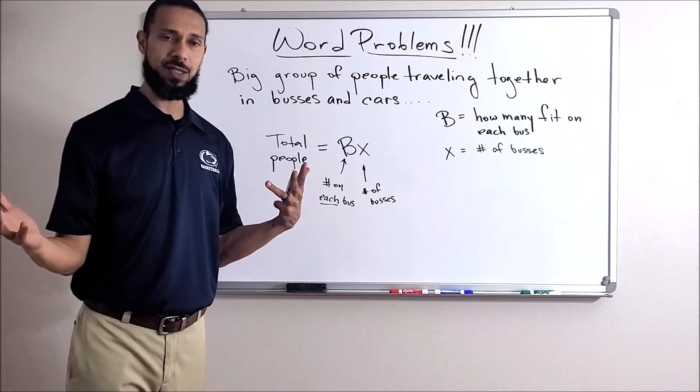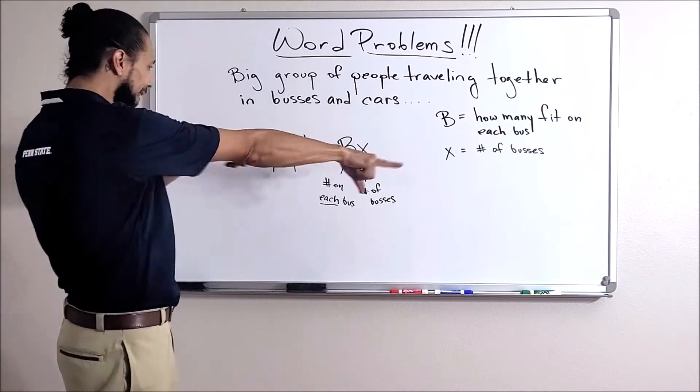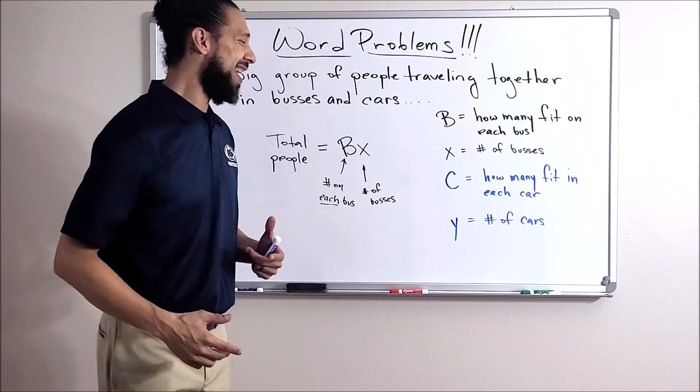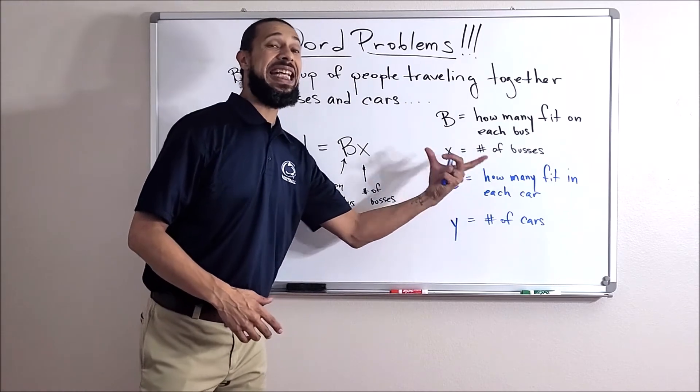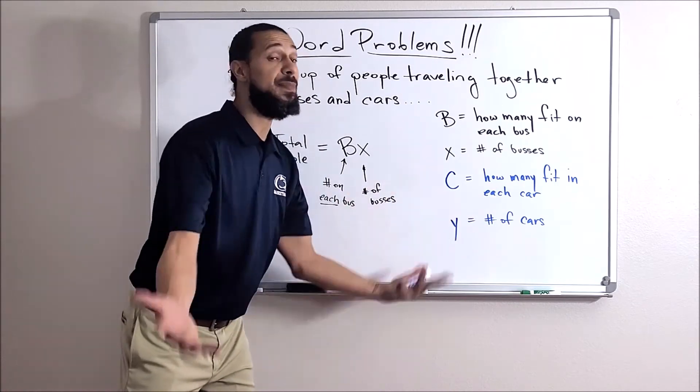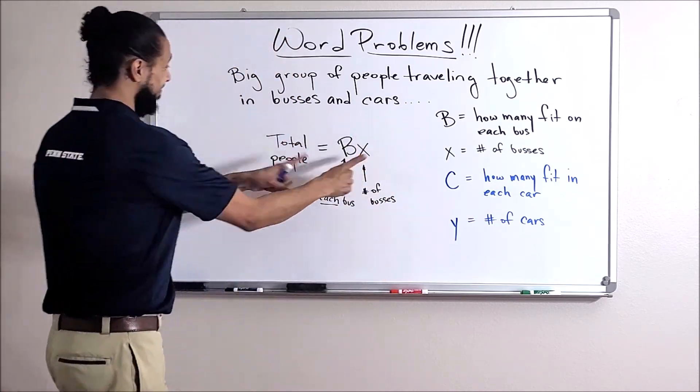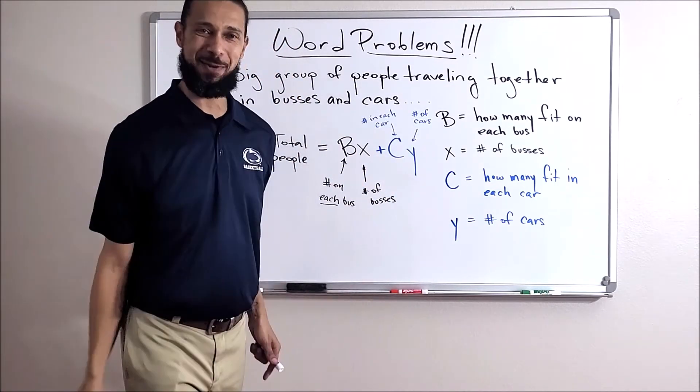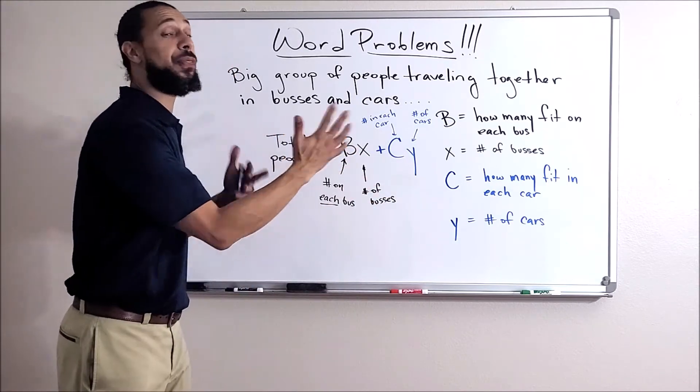Now can we do something very similar for cars? Yeah, just like that. And if C is the number of people that fit in each car and Y is the number of cars, would I just multiply them together to find out how many people total are in cars? Yes, that's exactly right.